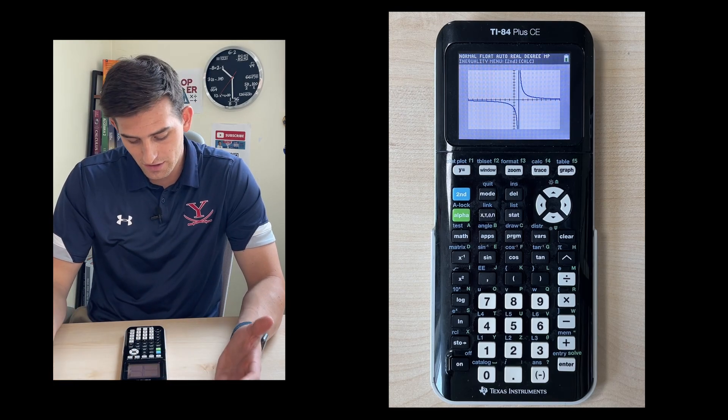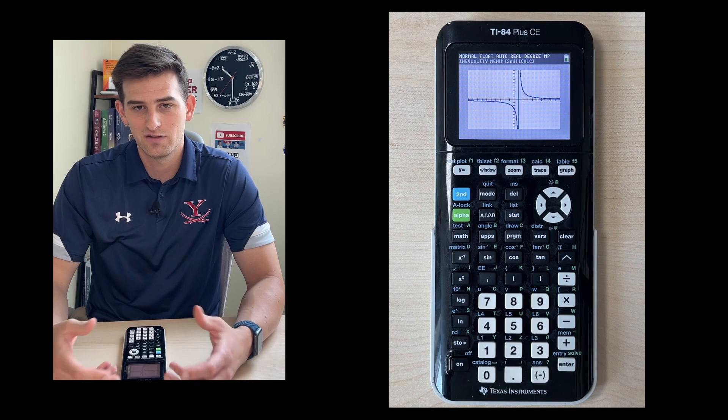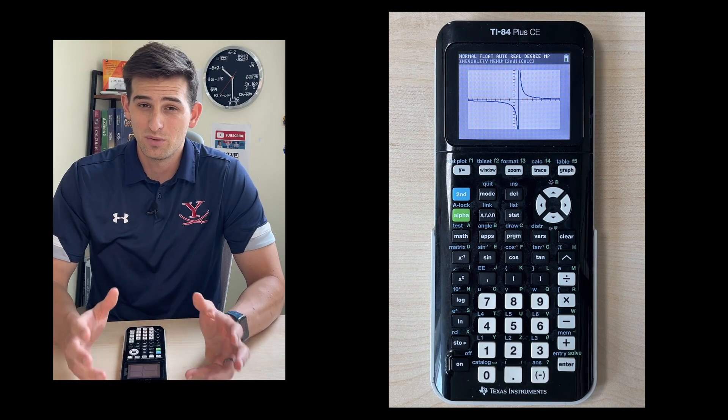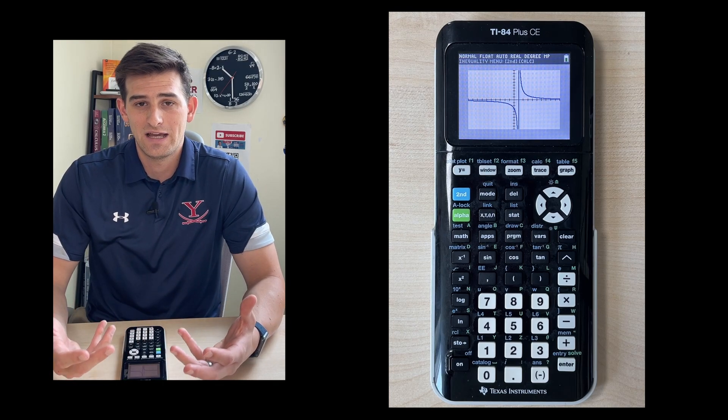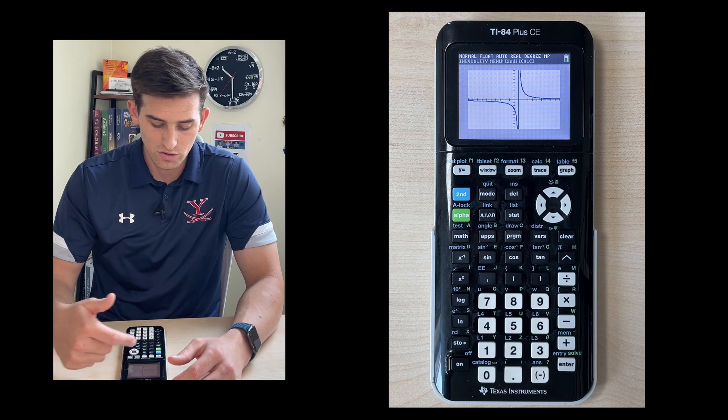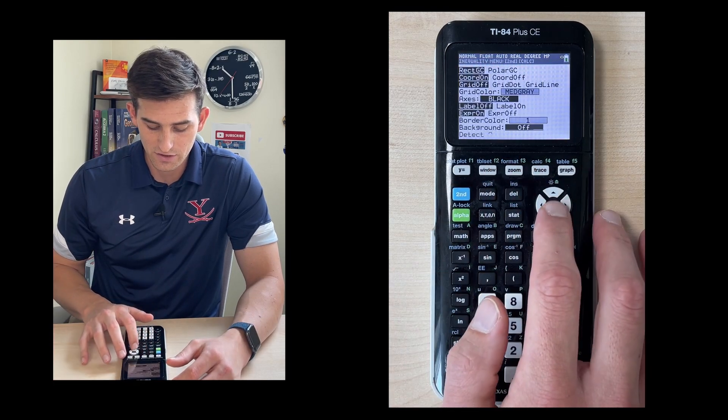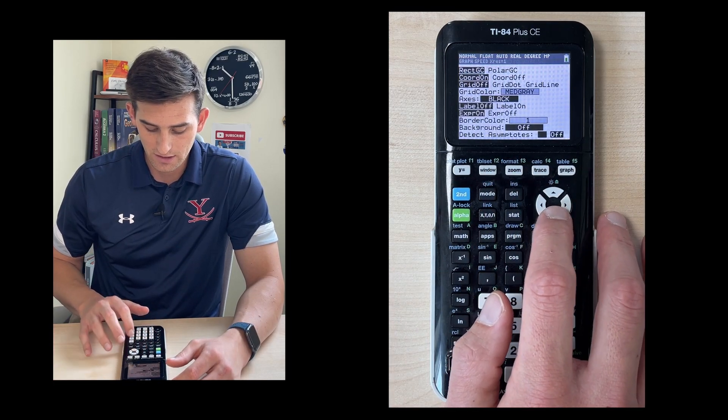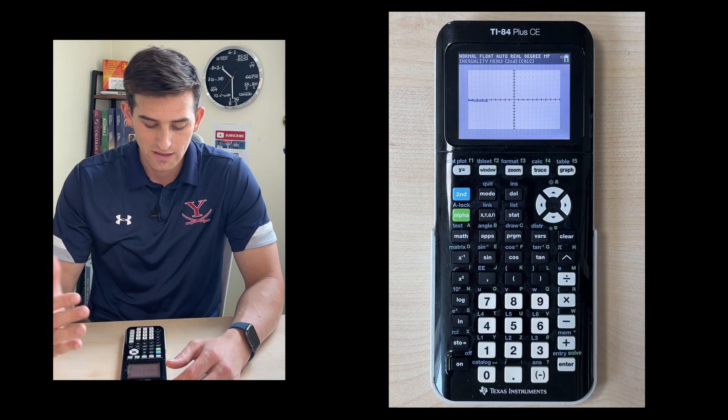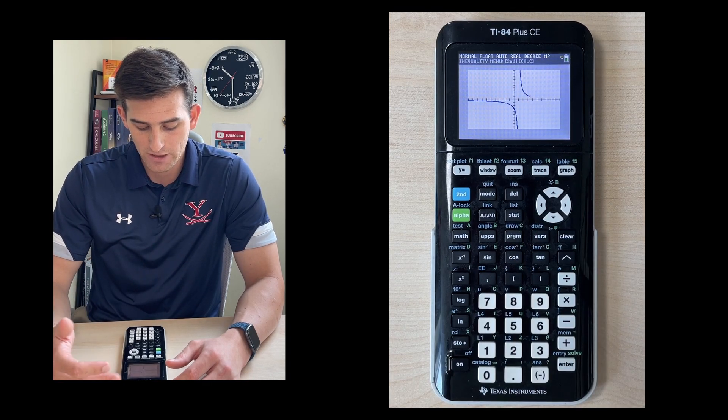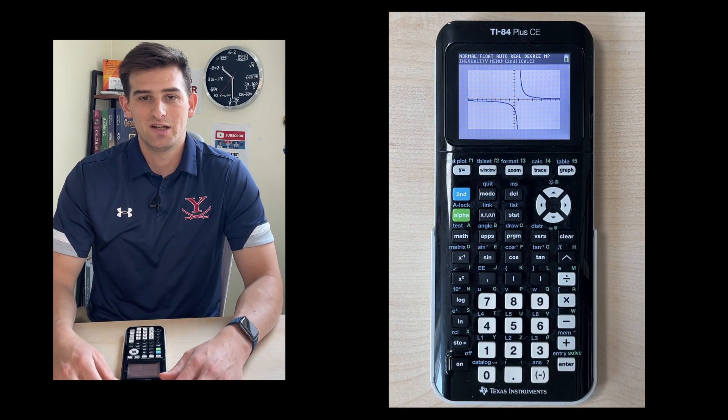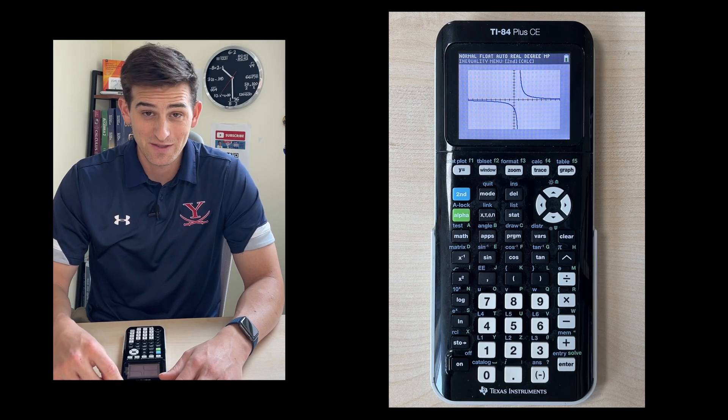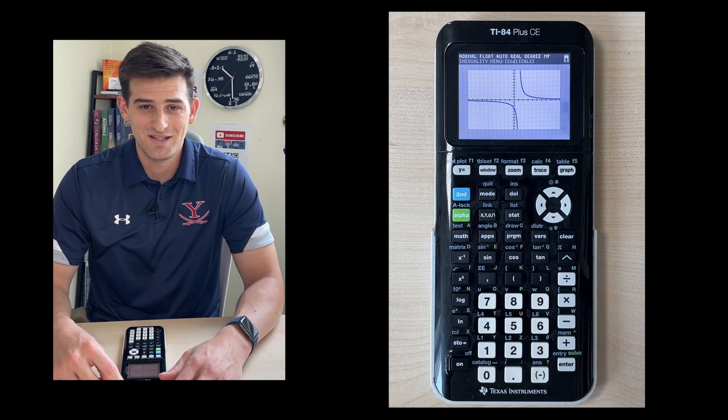So turning detecting asymptotes off helps the speed of the calculator improve, and it's really helpful, especially if you don't have a function that has an asymptote. If I go back to second format and turn my detecting asymptotes on, then it will make this function look the way it's supposed to, not showing the asymptote. So just a couple of features there that can help you rapidly increase your graphing speed on your TI-84 Plus CE graphing calculator.